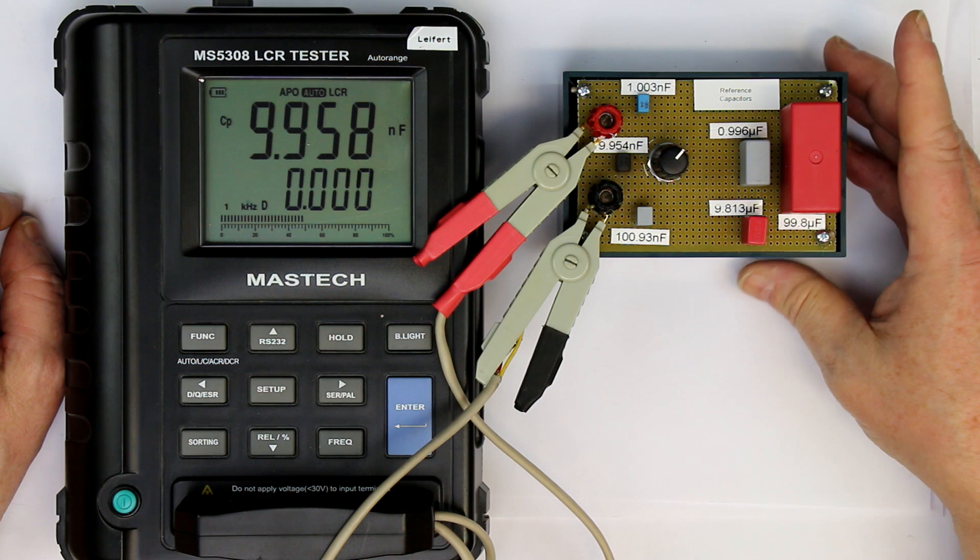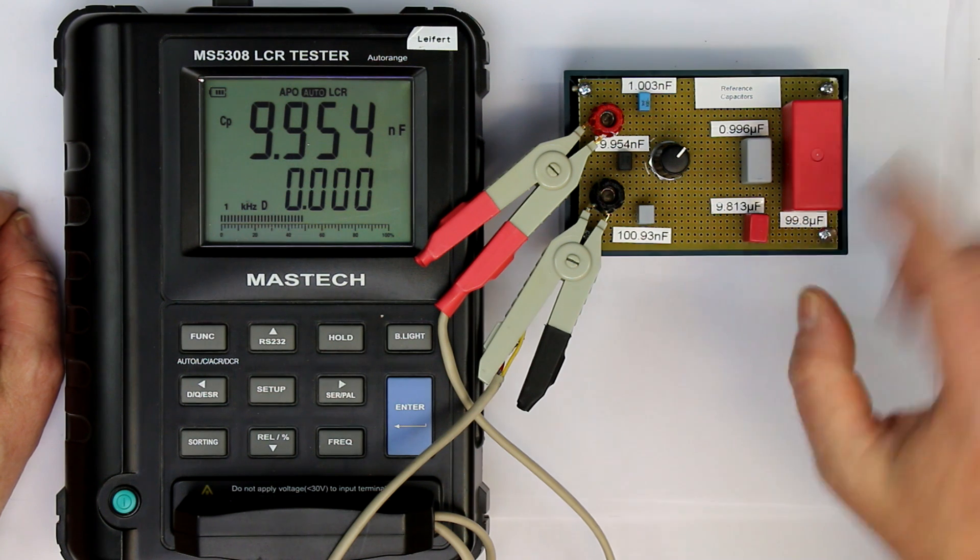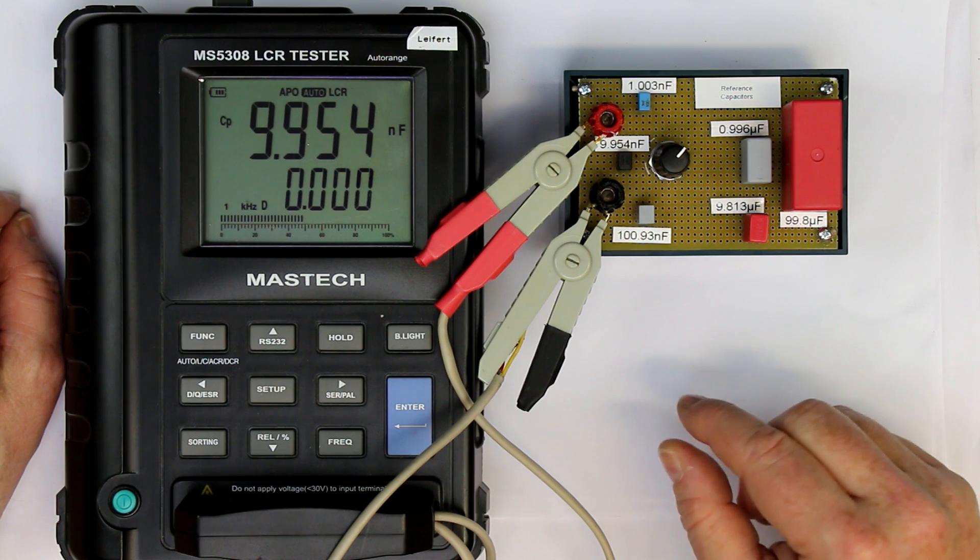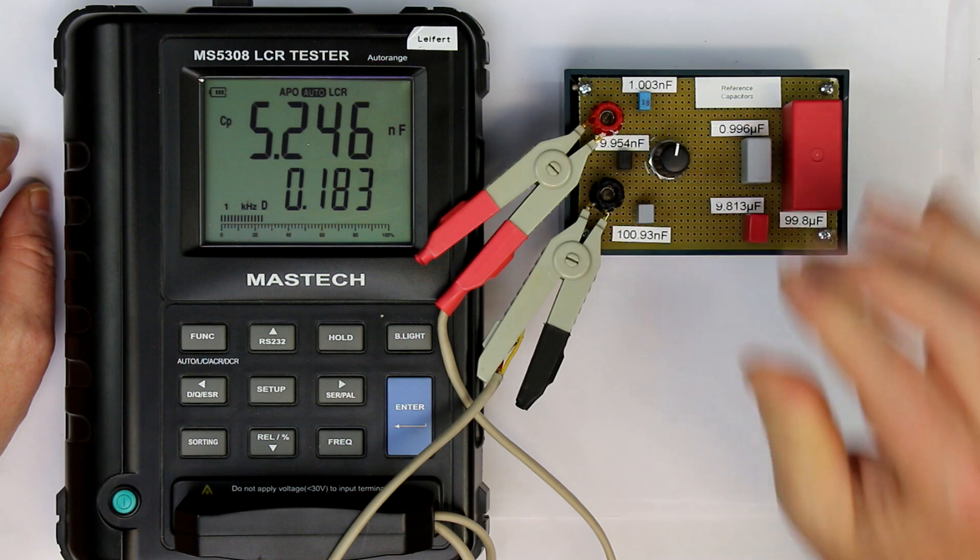Next is 10 nanofarad, and we get 9.954 nanofarads. You can see the repeatability is extremely good. So this is half a percent off in the accuracy range of the LCR meter.